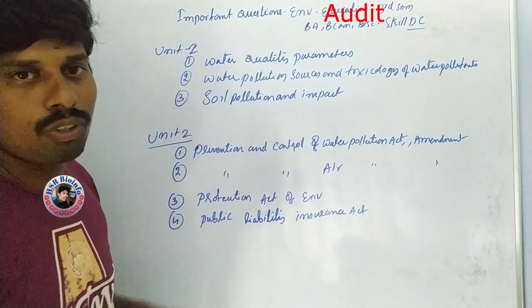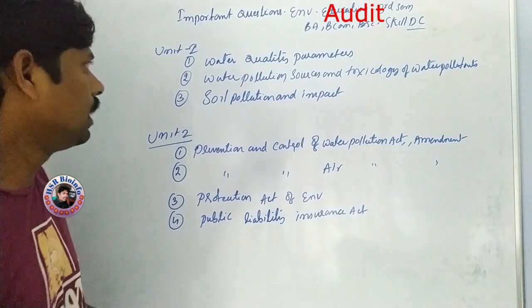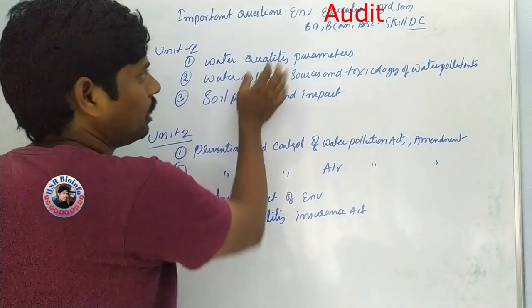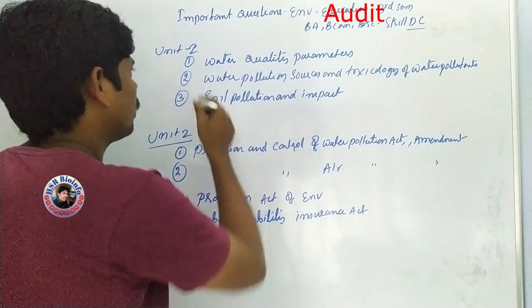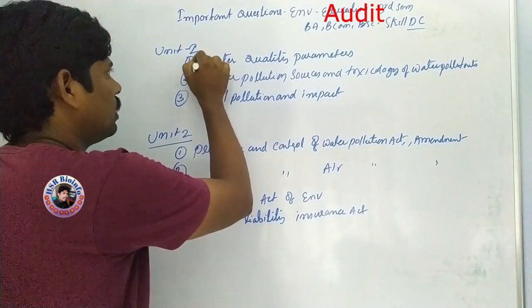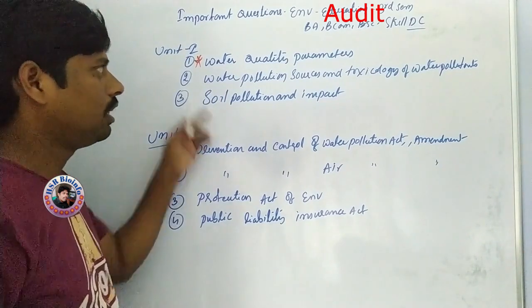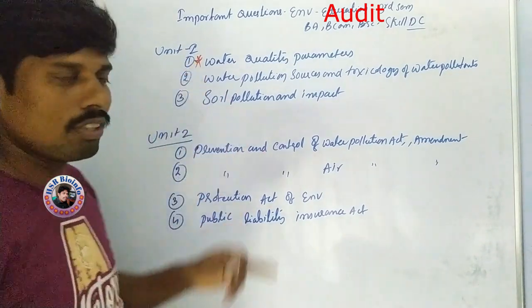So we have to go to the group. For example, water quality parameters. The first question is important: water quality parameters.